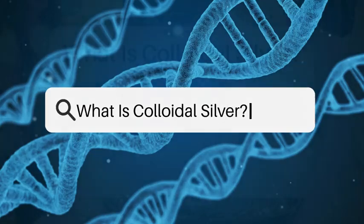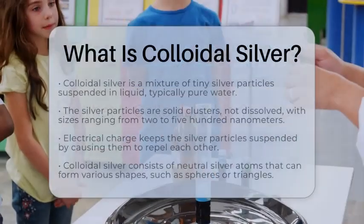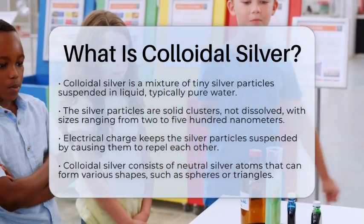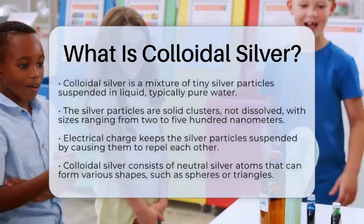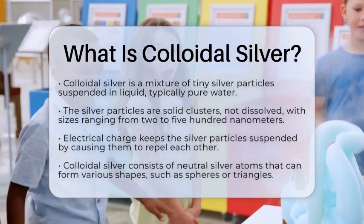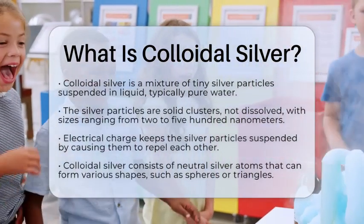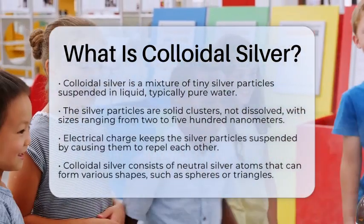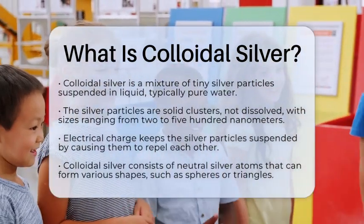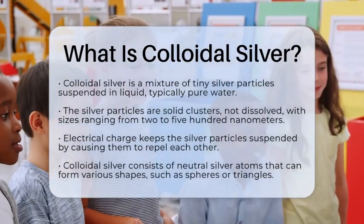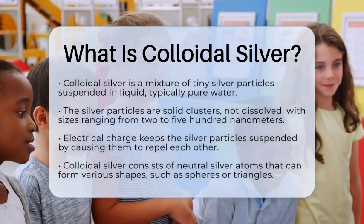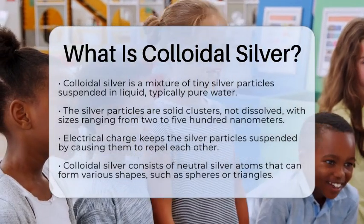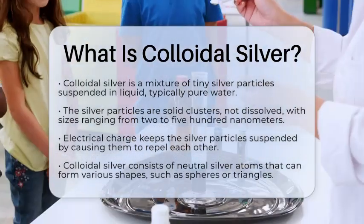What is colloidal silver? Have you ever heard of colloidal silver and wondered what it really is? Let's break it down in a simple way. Colloidal silver is a mixture where tiny silver particles are suspended in a liquid, usually pure water. These particles are not dissolved. Instead, they are solid clusters of silver atoms.